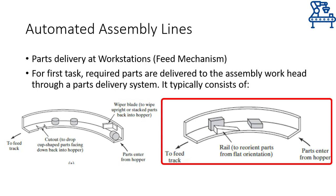On the other hand, this orientor will orient the wrongly oriented parts as shown in this schematic. A wiper blade may be installed at the beginning to reject standing parts, whereas the rail will orient the part correctly if required.